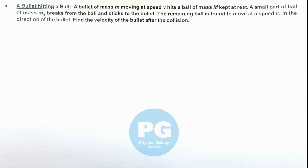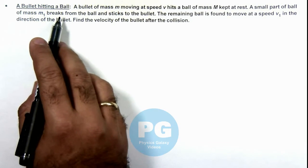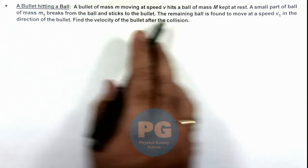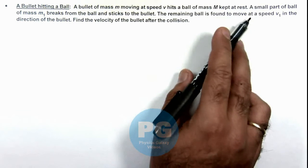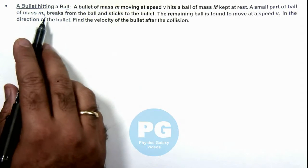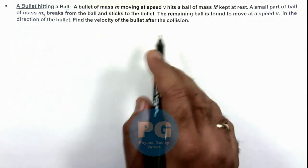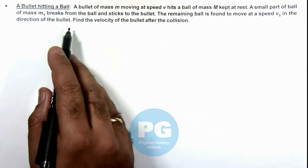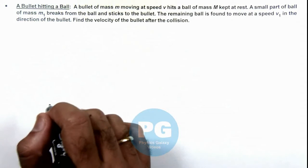This illustration describes the situation of a bullet hitting a ball. We are given that a bullet of mass m moving at speed v hits a ball of mass M kept at rest. A small part of the ball of mass m1 breaks from the ball and sticks to the bullet. The remaining ball is found to move at speed v1 in the direction of the bullet, and we are required to find the velocity of the bullet after the collision.